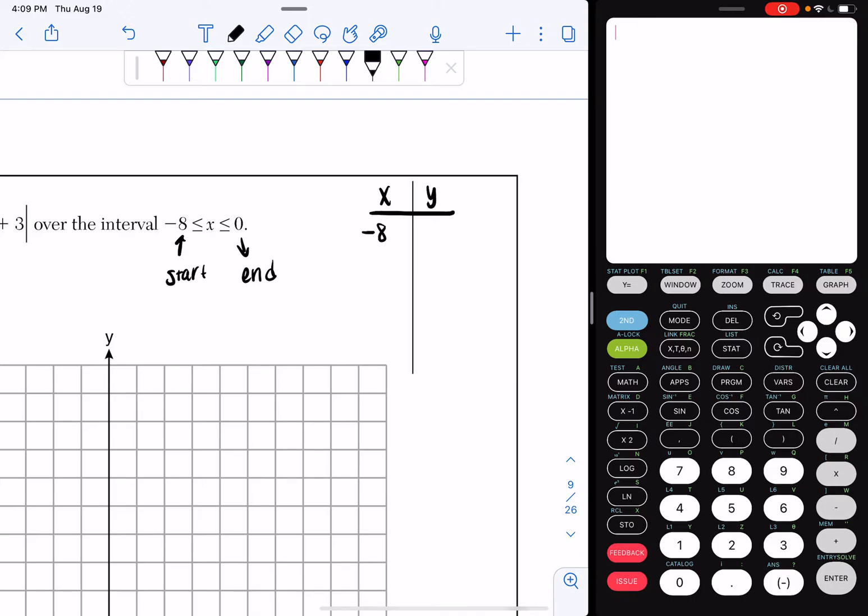So we're going to have negative 8, negative 7, negative 6, negative 5, negative 4, negative 3, negative 2, negative 1, and 0.